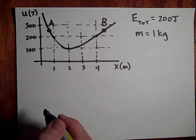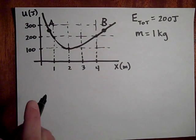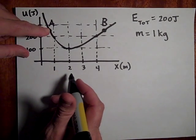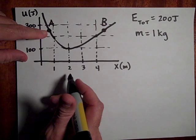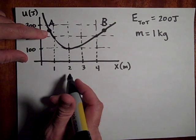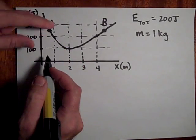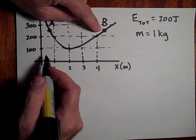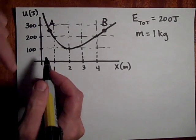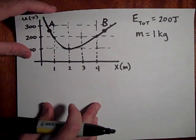Where is the force greater — at point a or point b? The answer is a, because the graph is steeper there. At a the slope is negative, so the force is positive (away from the origin). At b the slope is positive, so the force is negative (toward the origin).